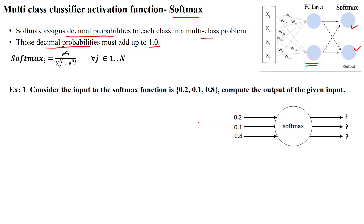For example, if you have two classes, one output may be 0.3 and another output may be 0.7. For three-class classification, the outputs might be 0.2, 0.1, and 0.7, and the sum of all outputs will be 1.0. The softmax classifier formula is e to the power a_i divided by the summation from j equals 1 to n of e to the power a_j.